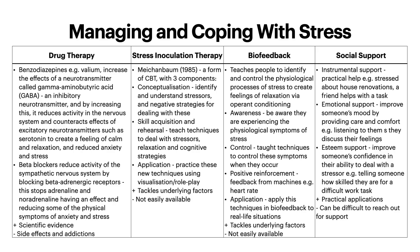Then you have stress inoculation therapy. Meichenbaum in 1985 developed this as a form of CBT with three components. Starting with conceptualisation: identifying and understanding the stressor and negative strategies for dealing with these. Then skill acquisition and rehearsal: teaching techniques to deal with the stressors, which can include relaxation and cognitive strategies. Then application: practising these new techniques using visualisation or role play. Of course, this tackles the underlying factors, but like all therapy it is not readily available to a lot of people — it's either expensive or just not available in the area.